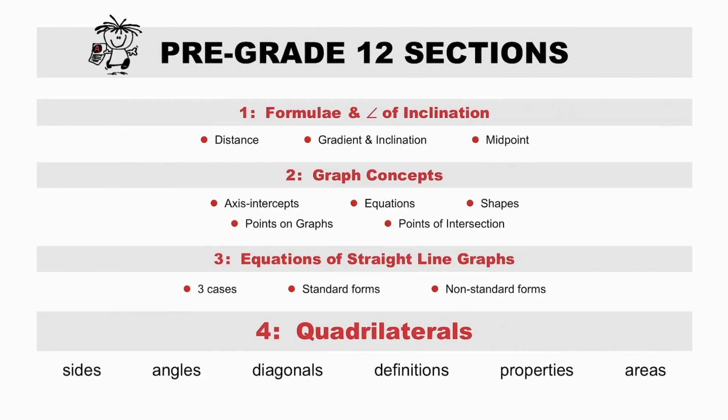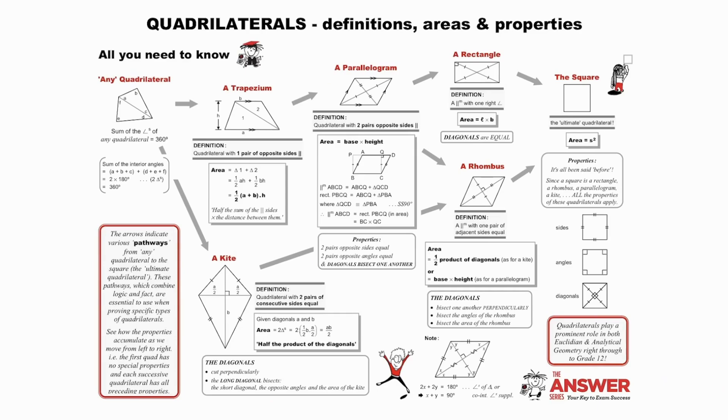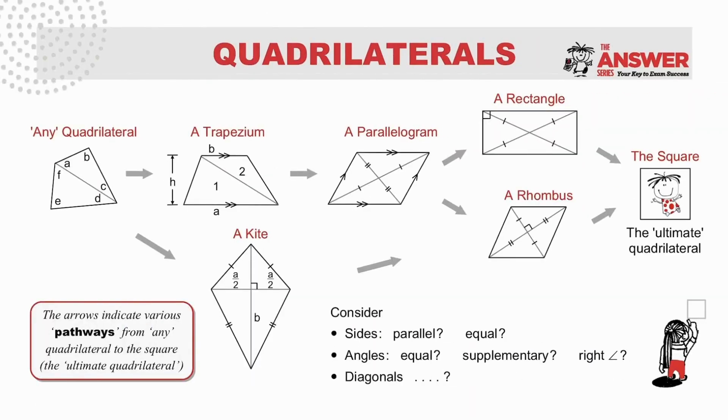We have now reached the last of the pre-grade 12 sections, quadrilaterals: sides, angles, diagonals, definitions, properties and areas. This is an intense summary that you will be comfortable with by the end of these videos and should always revisit. It contains all you need to know about quadrilaterals and appears in all grade 10 to 12 maths answer series study guides. It has to be part of your arsenal of knowledge. The logic is going to arise from the refining of quadrilaterals along various routes as they accumulate more and more properties.